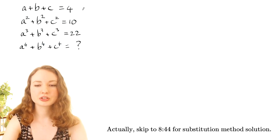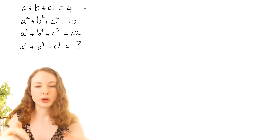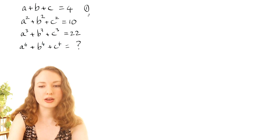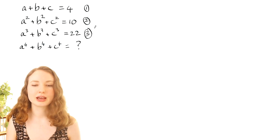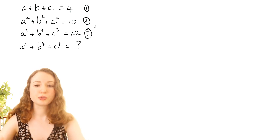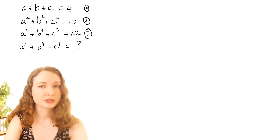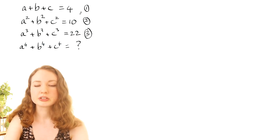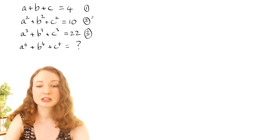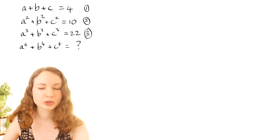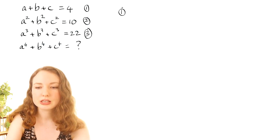Instead we're going to take each equation — I'll call this equation 1, equation 2, and equation 3 — and see what we can get out of them. The first thing I thought of was: what if we squared both sides of equation 1? That gives us some a-squareds and b-squareds that might combine with equation 2 somehow. Let's work out equation 1 squared.